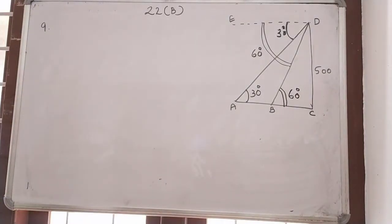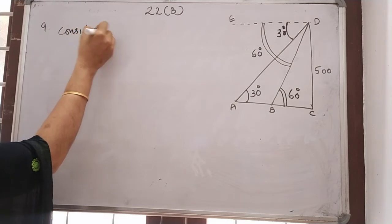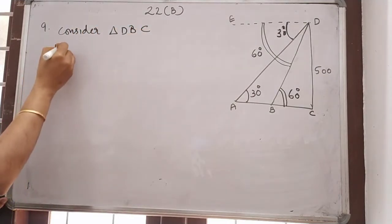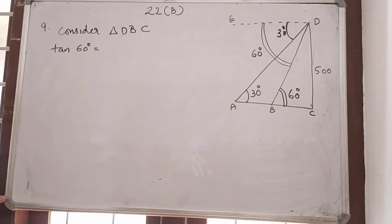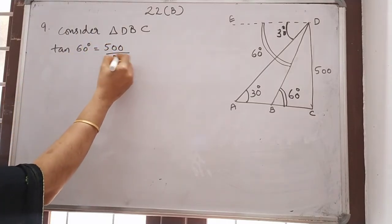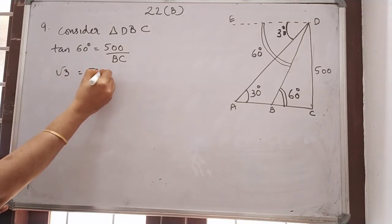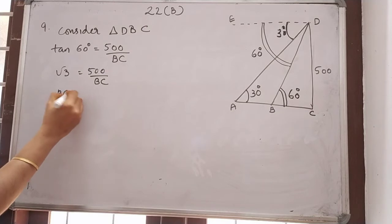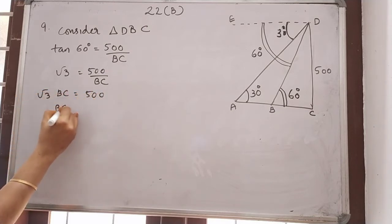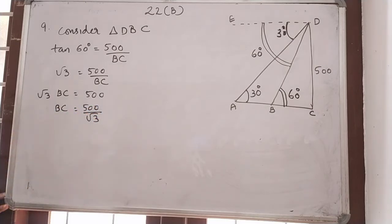Height is given as 500. If we consider triangle DBC, tan 60 degrees equals opposite divided by adjacent. So tan 60 equals 500 divided by adjacent BC. Tan 60 value is root 3, so root 3 is equal to 500 divided by BC. Therefore root 3 BC equals 500, and BC is equal to 500 divided by root 3.